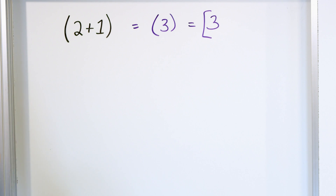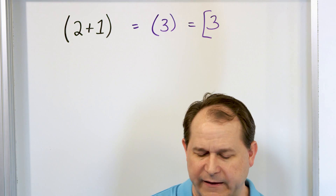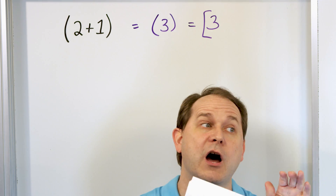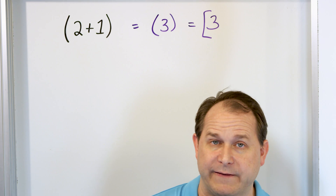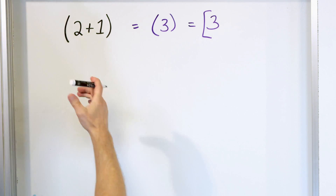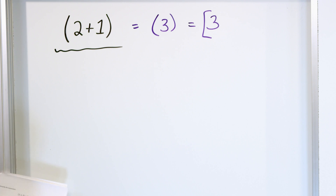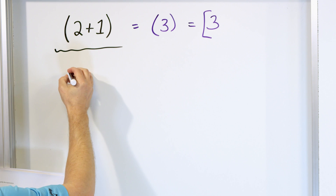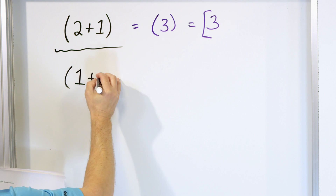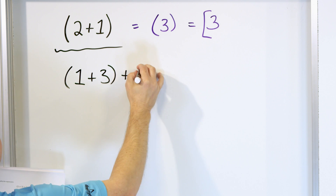You might look at this and say that was so easy, why are we wasting time? It's because when we have other things beyond the parentheses, we need to know how to do the math in the proper order — that's called the order of operations, and that's what we're starting with here. Let's say we have another problem: parentheses one plus three, close parentheses, plus two.